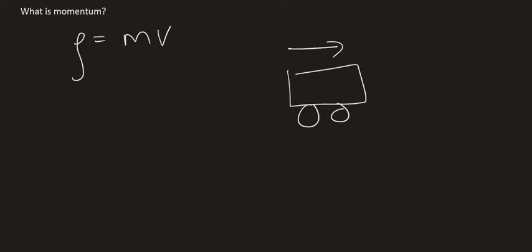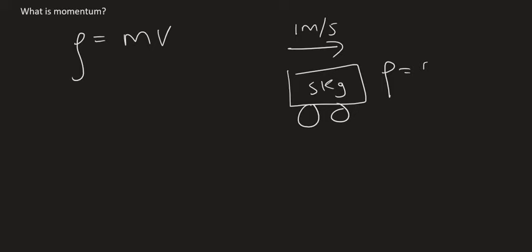Let's say we have an object, a car, traveling to the right, and it has a velocity of 1 meter per second and a mass of 5 kilograms. Then we could say that the momentum of the car is its mass, so that's going to be 5, times by its velocity, which is 1, and that's going to be equal to 5.